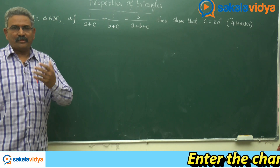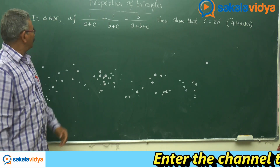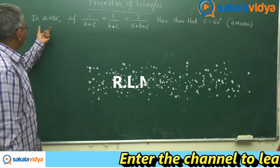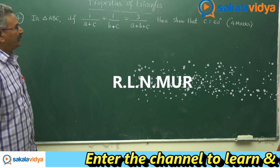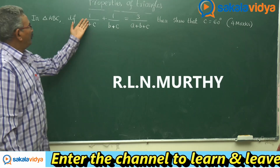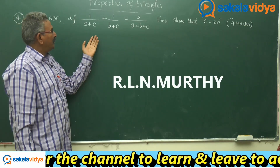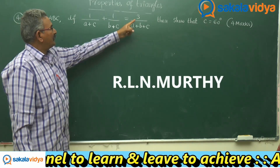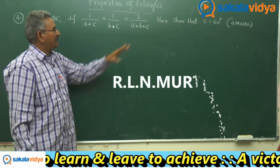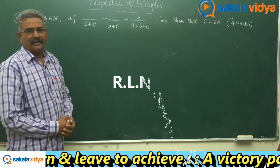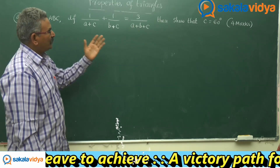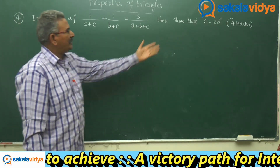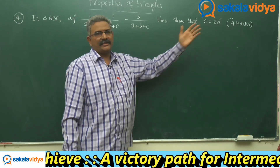Let us solve one more problem. In triangle ABC, if 1 by A plus C plus 1 by B plus C is equal to 3 by A plus B plus C, then show that C is equal to 60 degrees.